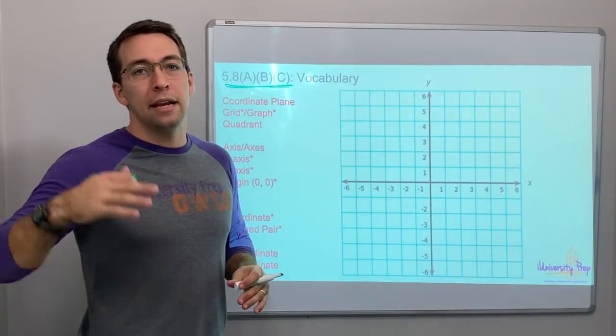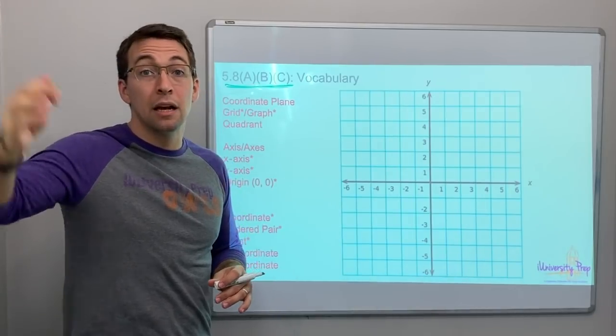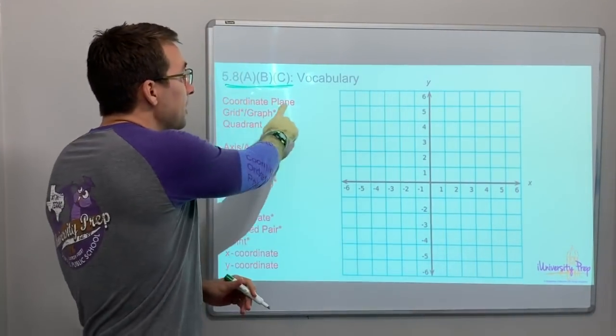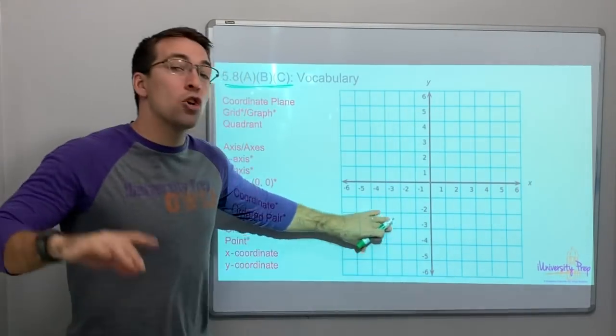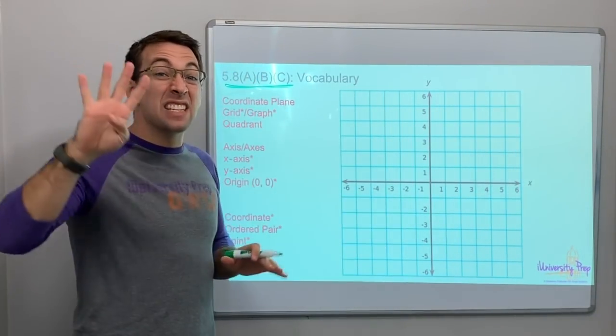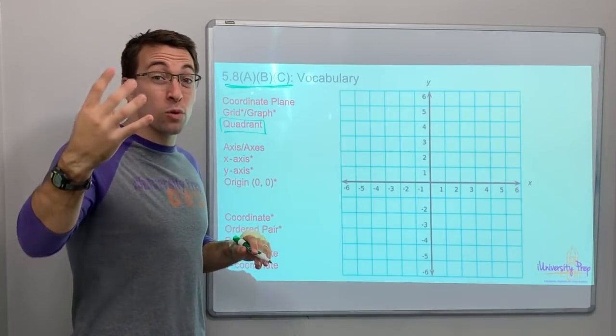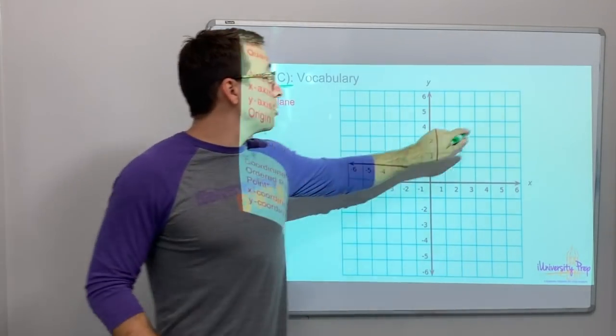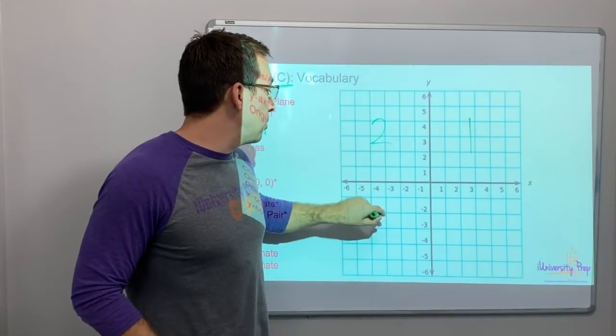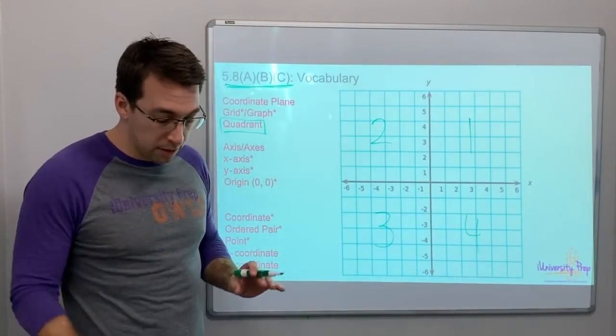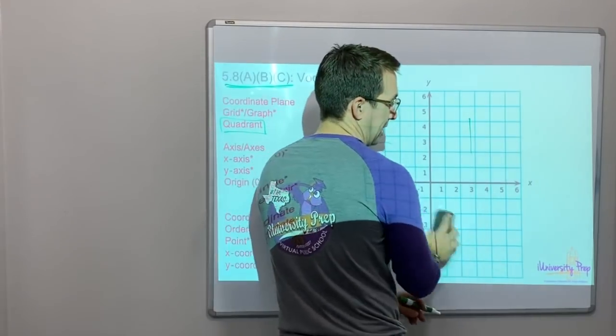I'm going to go through it thoroughly right now, and then for 5.8A, B, and 5.8C, I'm going to kind of skim over very quickly. The coordinate plane - this is the coordinate plane, all of it - and it has four quadrants. Quadrants, think like the number four in Spanish, cuatro.